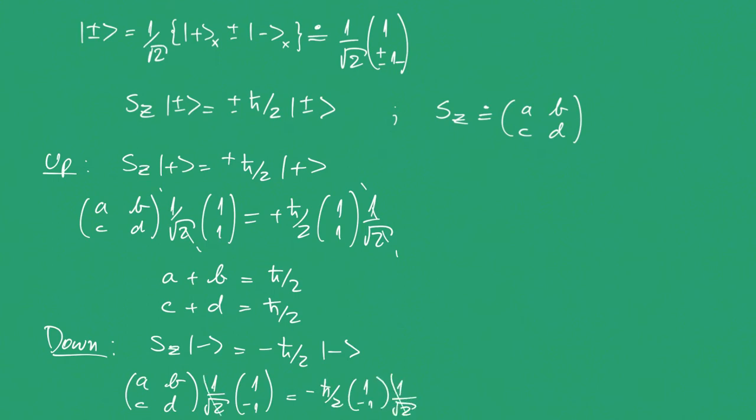And then if we multiply here, we have A minus B equals h-bar over 2, and C minus D equals plus h-bar over 2.